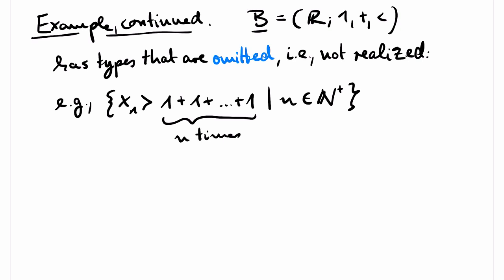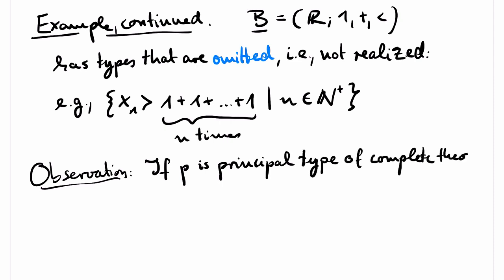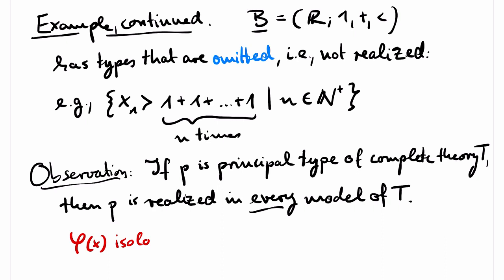I claim that all the types that are not realized in B cannot be principal. And this is a general observation. To see this, suppose that the formula psi isolates the type P.